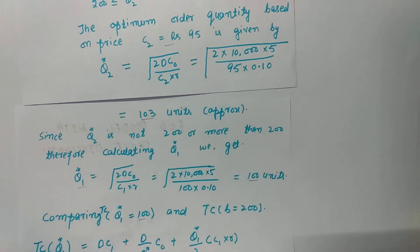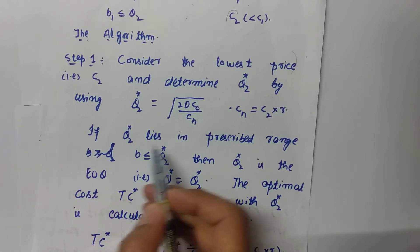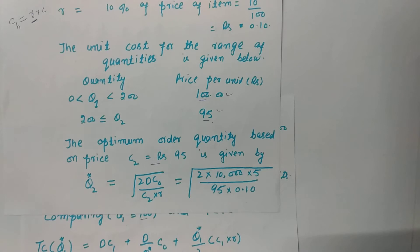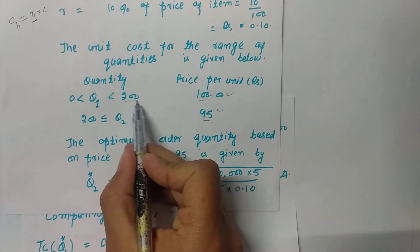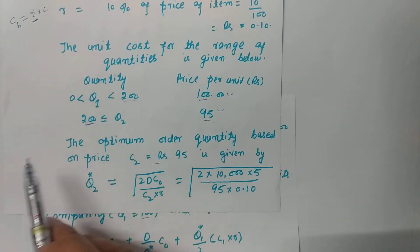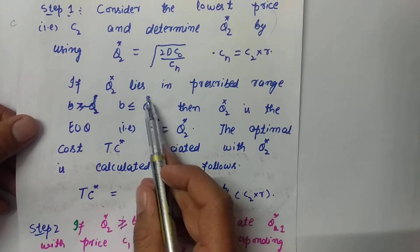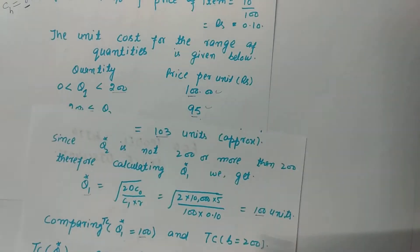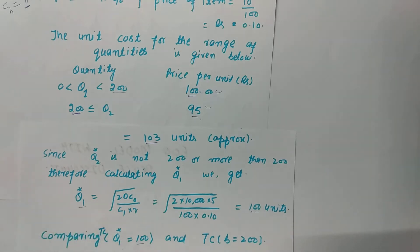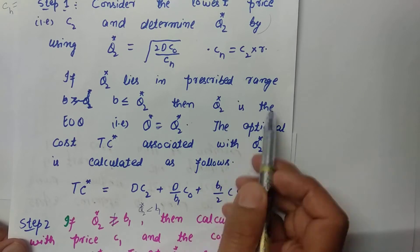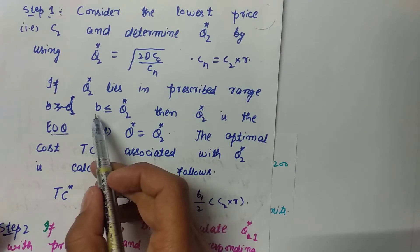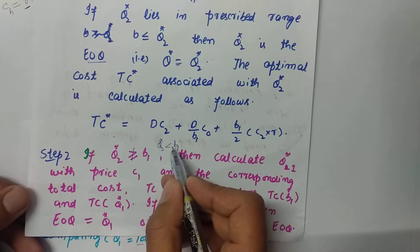We now check if Q*2 lies in the prescribed range, i.e., B1 ≤ Q*2, where B1 = 200 is the quantity at which the price break occurs. However, Q*2 = 103 is strictly less than B1 = 200 — it is neither greater than nor equal to 200. Therefore the condition is not satisfied and we must proceed to Step 2.